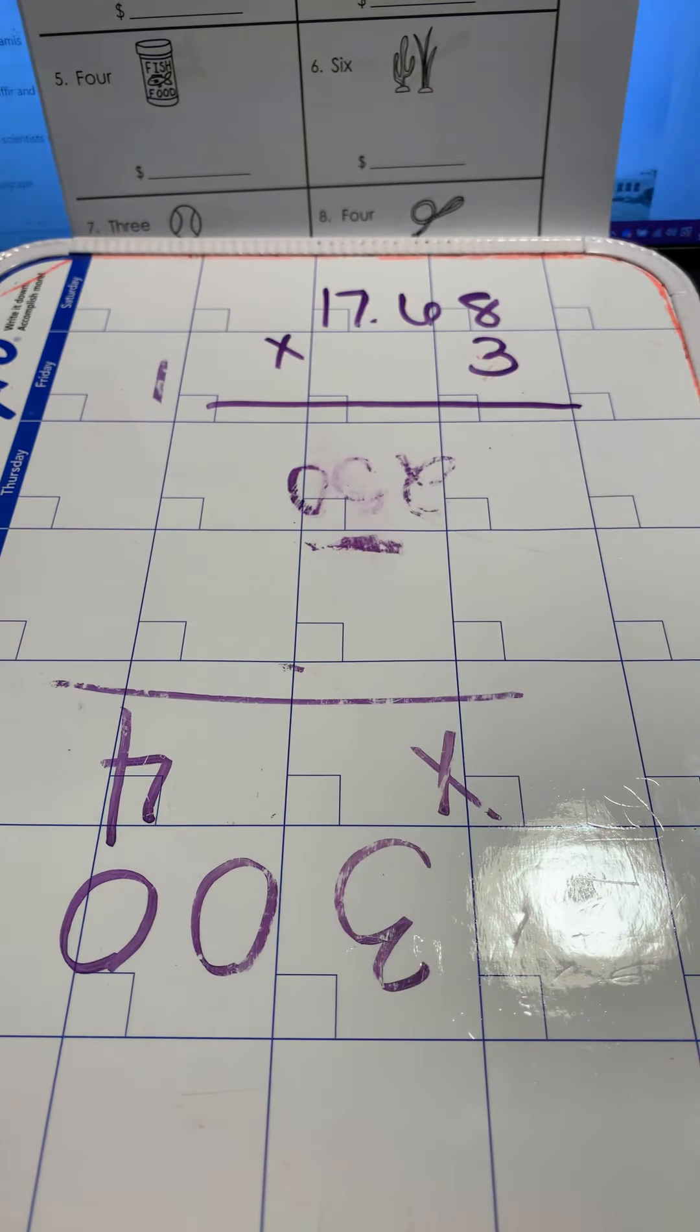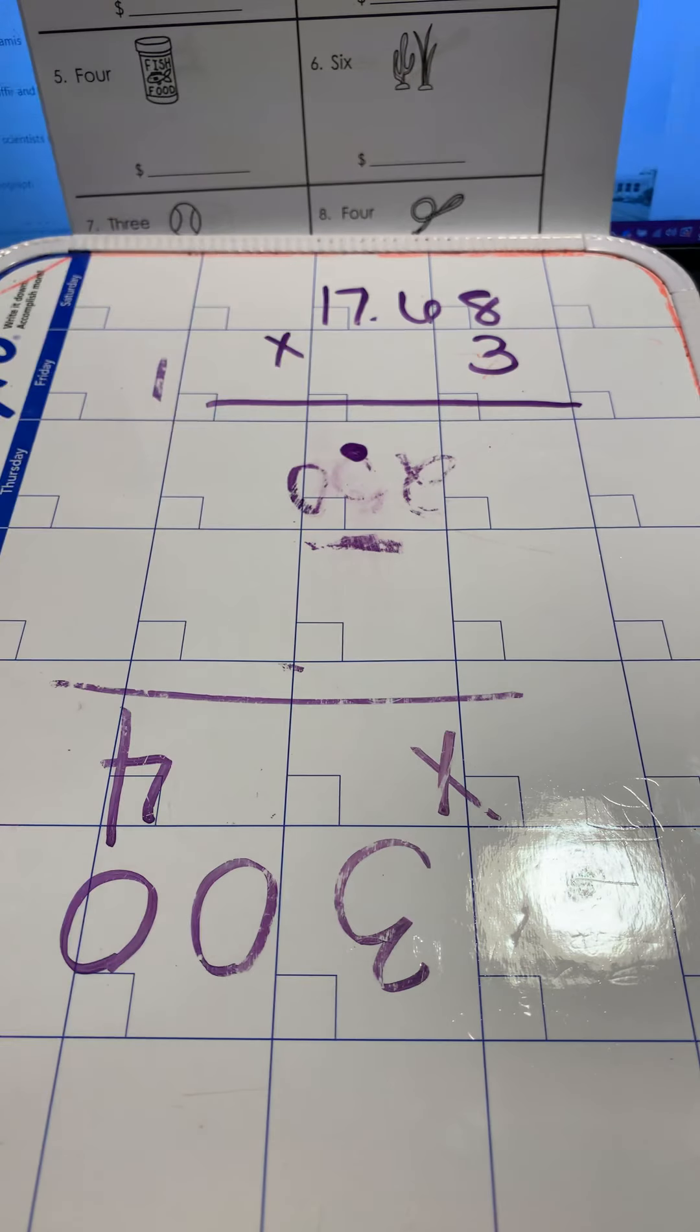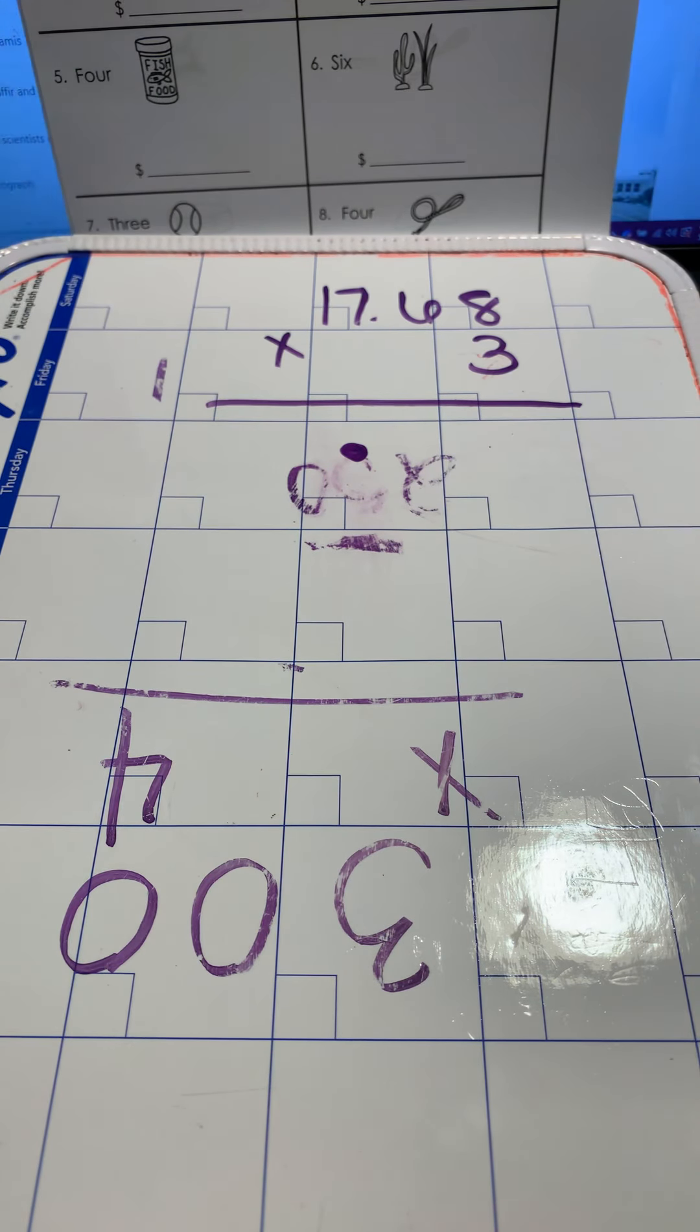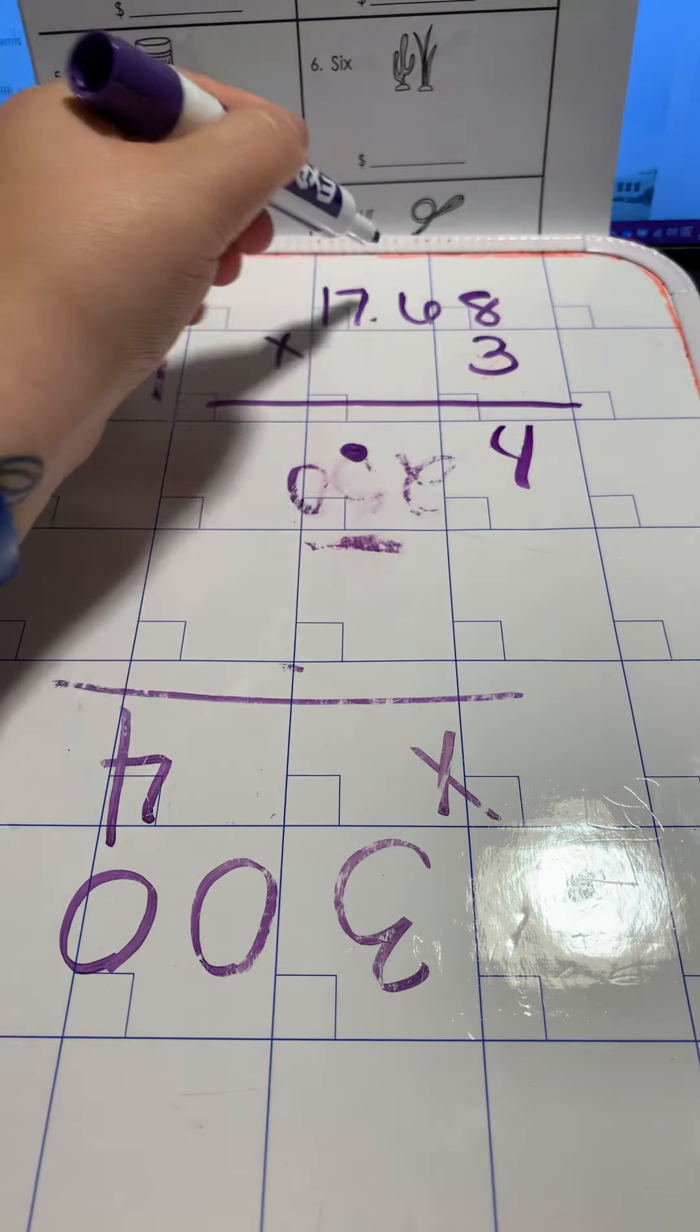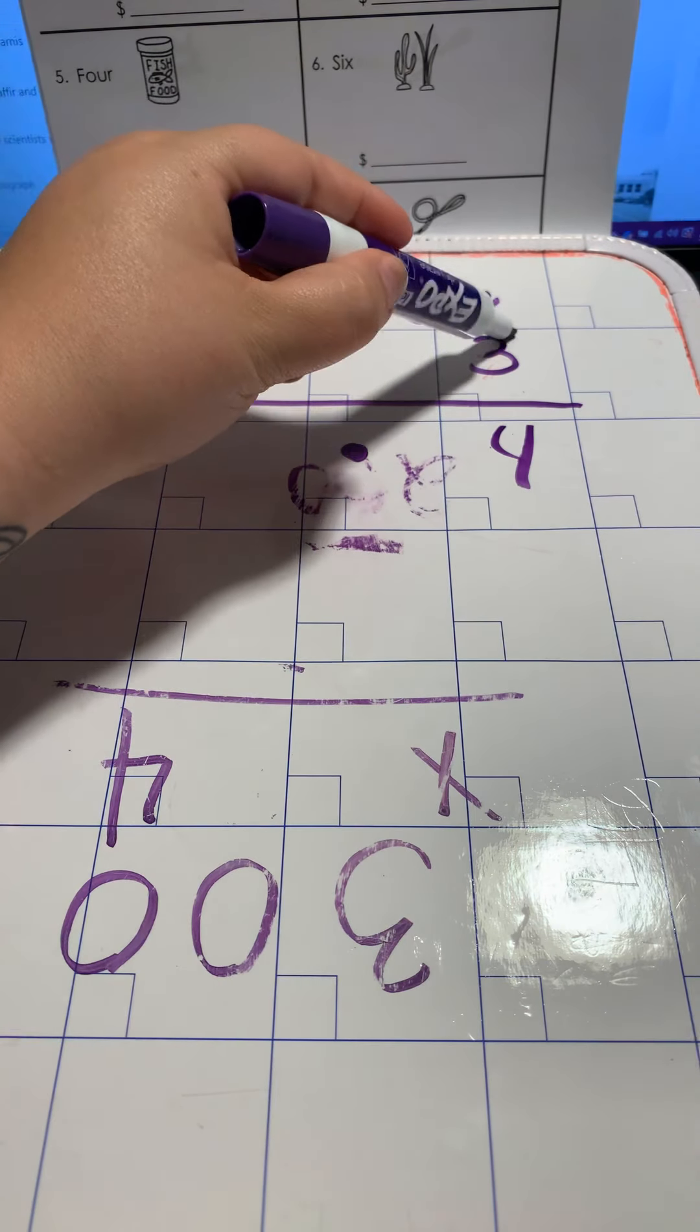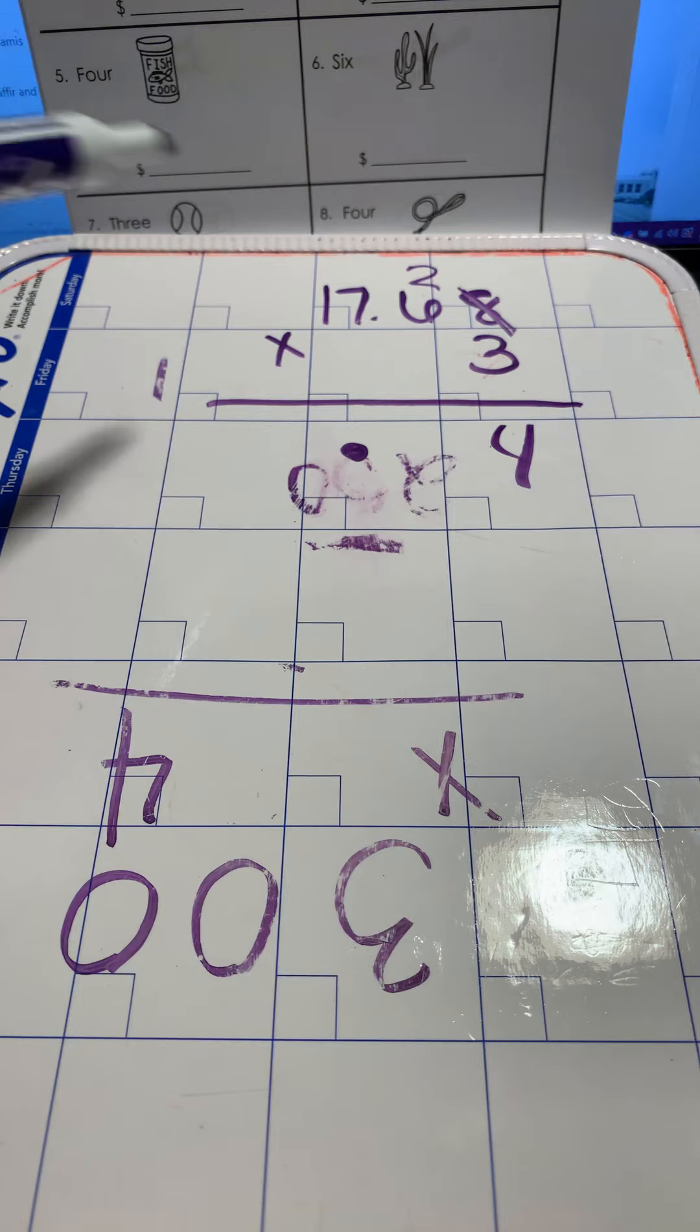So you're just going to multiply. Remember, bring your decimal down, and then multiply. You're going to do eight times three, which is 24. Your four goes down. Your two goes up above the six. Now what I teach the kids to do is cross out the eight, because your eight's done. You don't need it anymore.